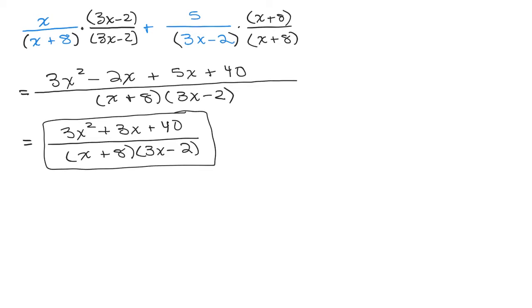But again, if you'd like, you could multiply out the denominator. Just remember: if it doesn't cancel in factored form, it's not going to cancel after you multiply those denominators together.